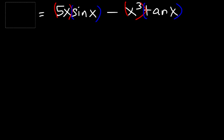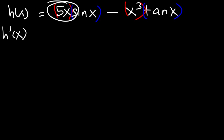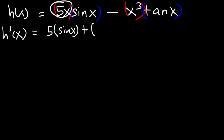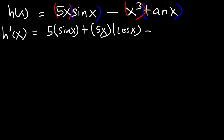Let's call this h so we don't confuse it with the other f. So let's determine h prime of x. Differentiating the first part, the derivative of 5x is 5, and then leave the second part the way it is. Then plus, keep the first part the same and differentiate the second part. The derivative of sine is cosine. Now let's apply the product rule to the second expression. The derivative of x cubed is 3x squared, and then leave the second part the way it is. Plus keep the first part the same and differentiate the second part. The derivative of tangent is secant squared.